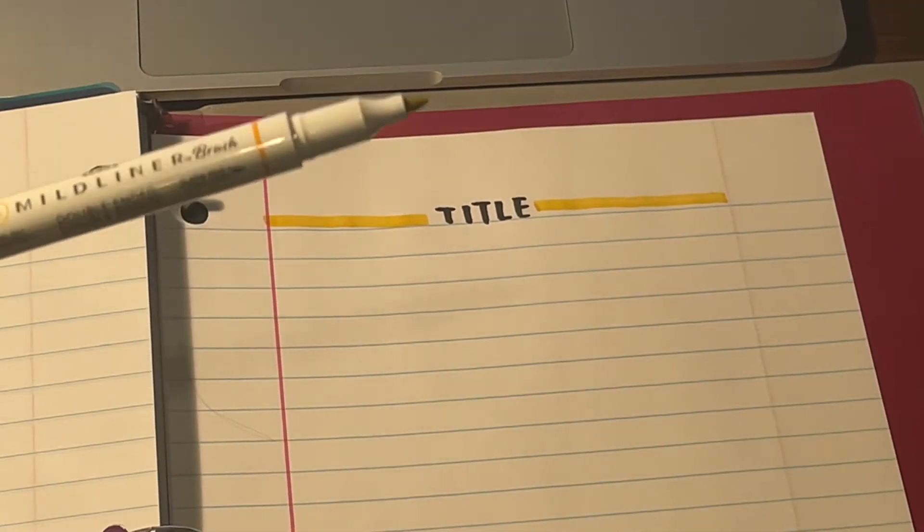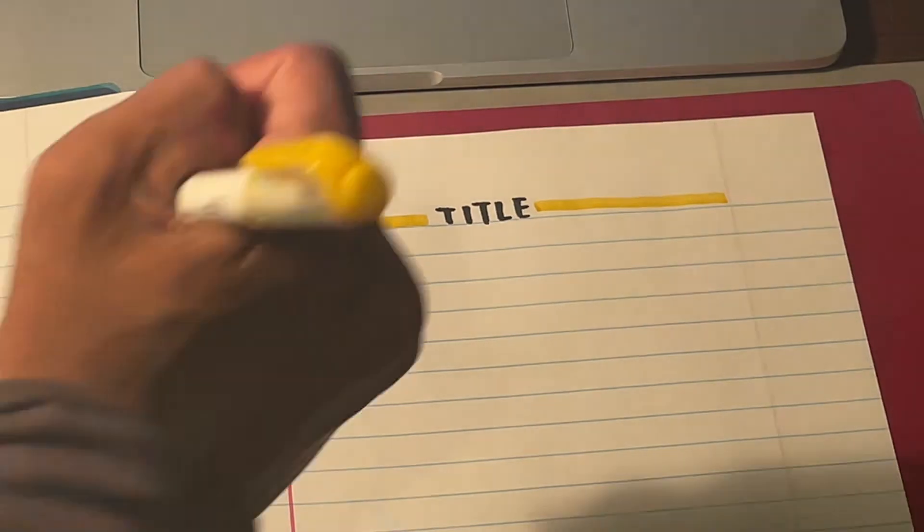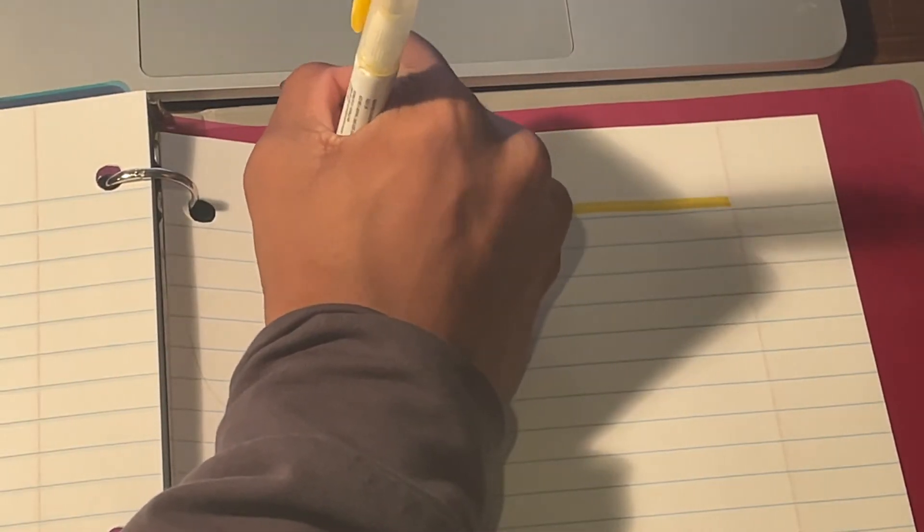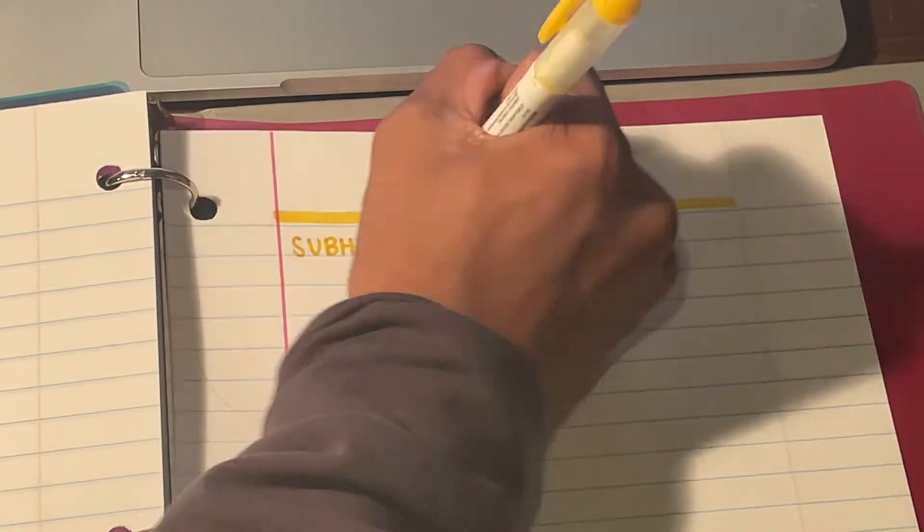I like to use the fine point tip of the highlighter to write my subheadings. I'll start by writing my first subheading right below the title.